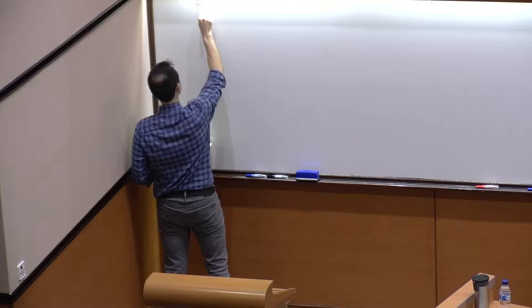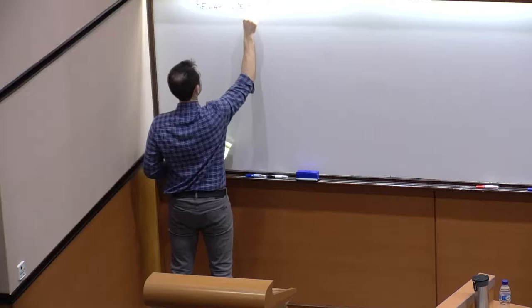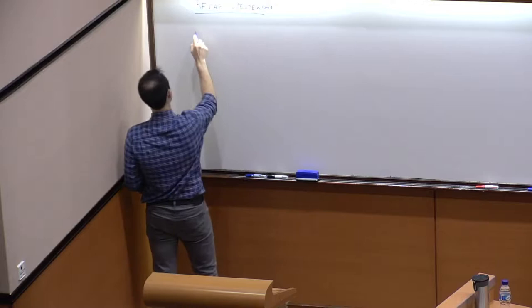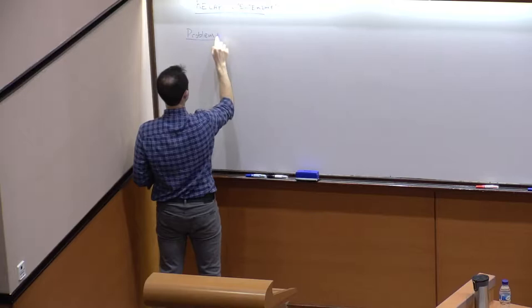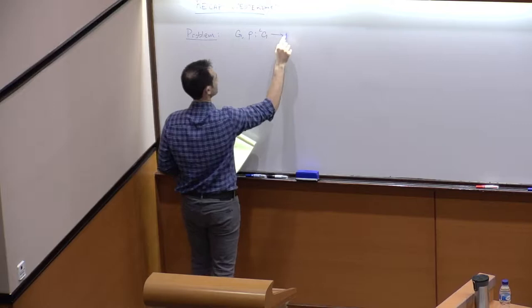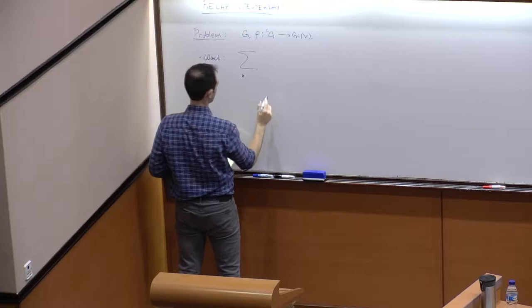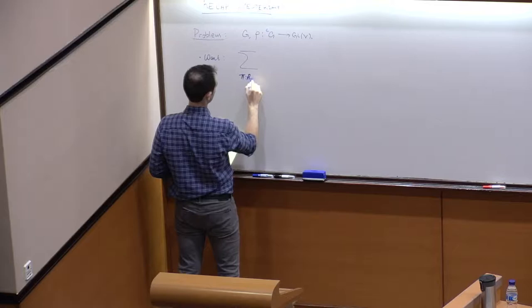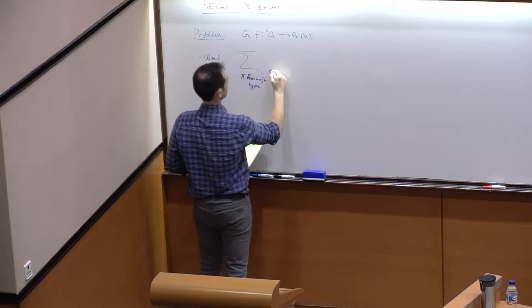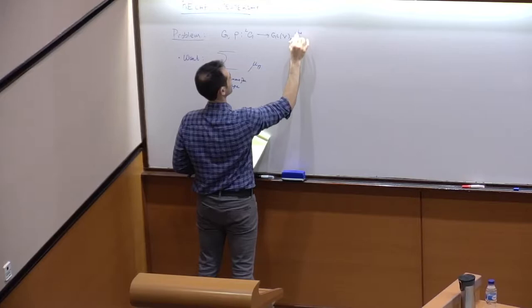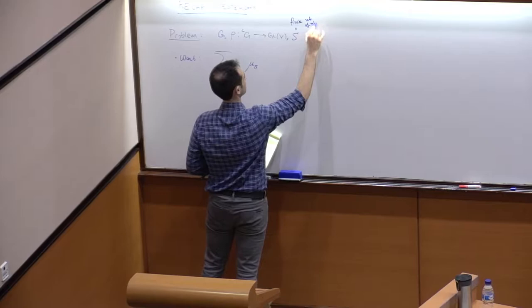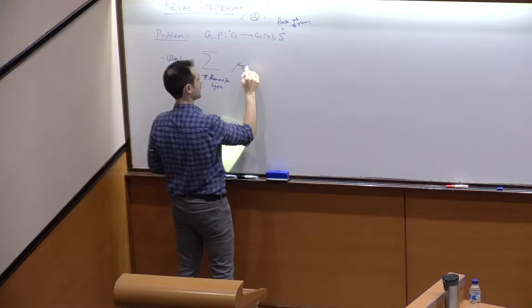What did we do yesterday? We set up the problem: g is fixed and rho is a representation of GL. We want to write a trace formula of Ramanujan type, with a multiplicity of pi, and we're fixing a finite set of places. I'm only talking about Q, but everything can be generalized.